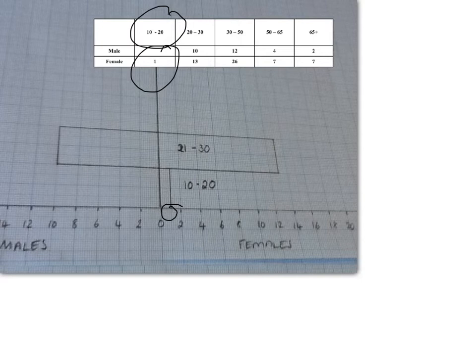Then up to your next age group, the 20 to 30 age group. Here we had 10 males, so you draw your horizontal bar out to the 10 on the left-hand side, up the 2 centimeters. For the females, we had 13 females, as I've drawn as you can see.